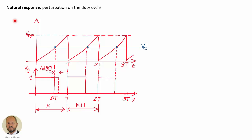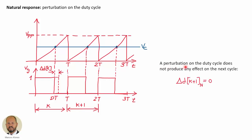As we have done for current mode control, we first obtain the natural response — that is, how the duty cycle changes if we perform a change on the signal itself. If for any reason the duty cycle changes by a small value Δd(k) at switching period k, this perturbation is not going to affect the value of the next duty cycle, because the next duty cycle is determined by the comparator. Therefore, the natural response Δd(k+1) equals zero.